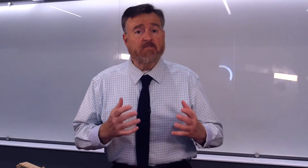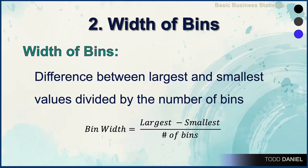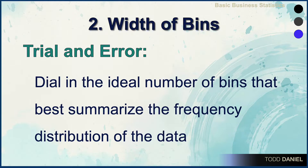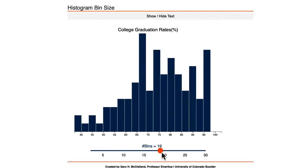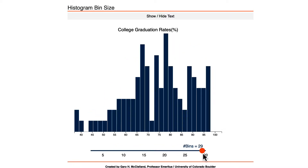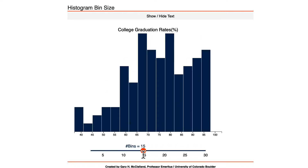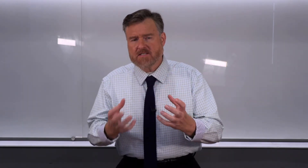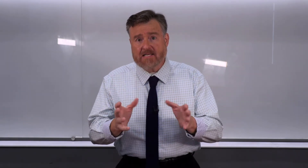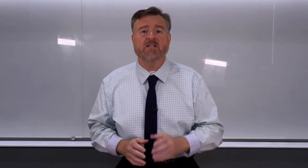The number of bins that you choose will influence the width of those bins. The width of the bins is the difference between the largest and the smallest values in your data set, divided by the total number of bins. You can determine this a priori, or it's very common to use trial and error to dial in the ideal number of bins. There's nothing wrong with running your descriptive statistics multiple times in Excel, adjusting bin widths, to best display your data most honestly and most clearly.